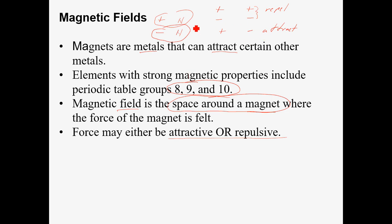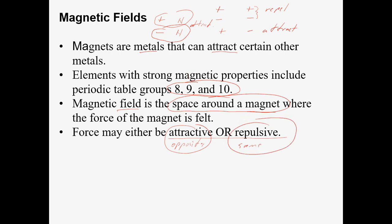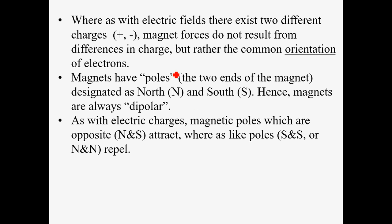Opposites attract, and so do charges and neutrals. Similarly with magnetic fields, they can be attractive or repulsive: opposites attract and the same poles repel. With electric fields there are positive and negative charges; with magnetic fields it doesn't result from differences in charge directly — it has to do with electrons and their orientation. For Science 30, the key point is that magnets have poles referred to as the north and south poles, and those are opposites. All magnets are dipolar — they all have a north pole and a south pole.